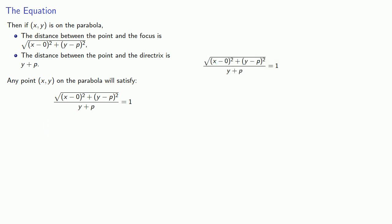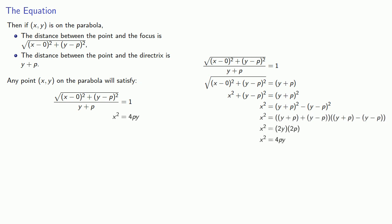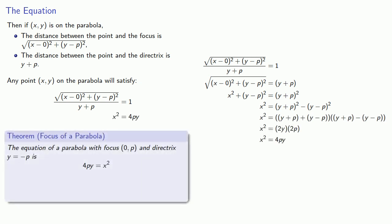And we'll do a bunch of algebraic simplification to find... And this proves the first part of the following result: The equation of a parabola with focus (0, p) and directrix y equals negative p is 4py equals x squared.